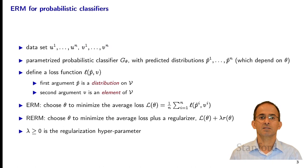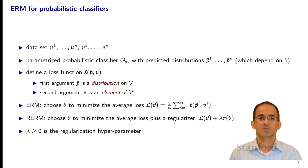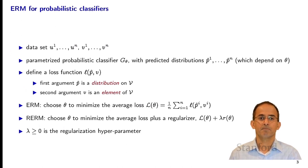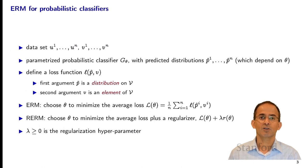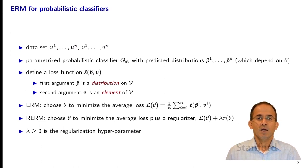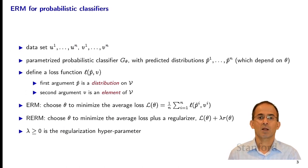The loss function has to be able to compare two things: a p-hat and a v. The p-hat is a distribution on our target set script V. One thing to notice is that p-hat is actually a probability distribution — it's a function. So we're feeding into this loss function l another function and a v, which is just one of our possible targets.